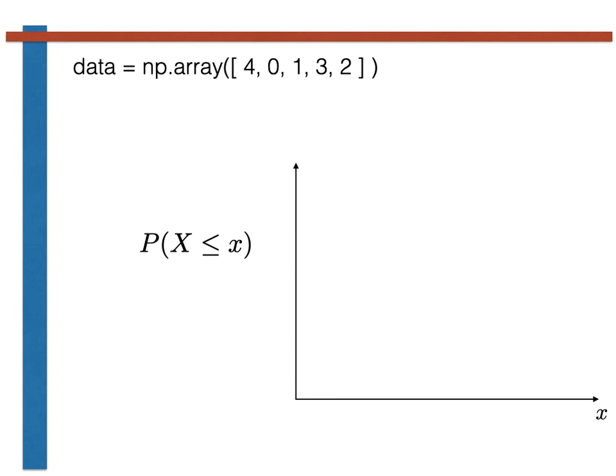Now, as data is just a numpy array, I can sort it using the sort method that you have just learned about in the previous exercise, as shown here. If I print data now, you will see that the order of the elements has changed and the array is now in ascending order.